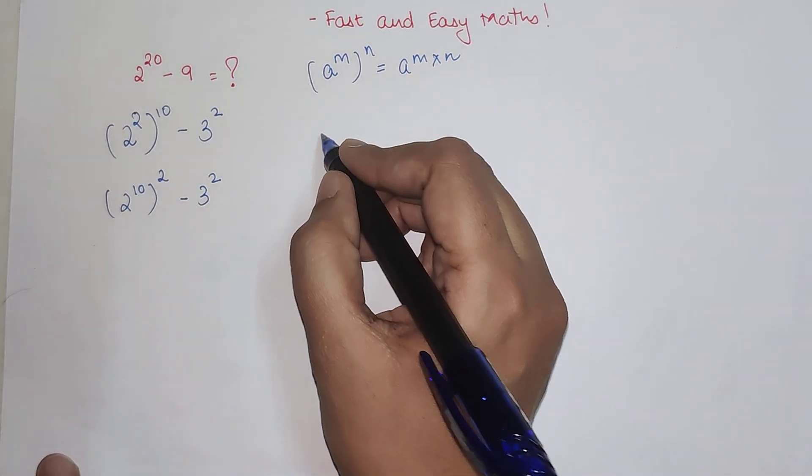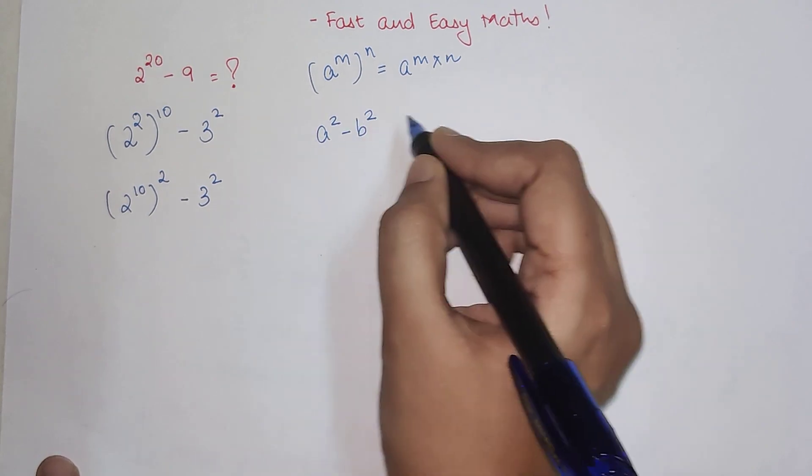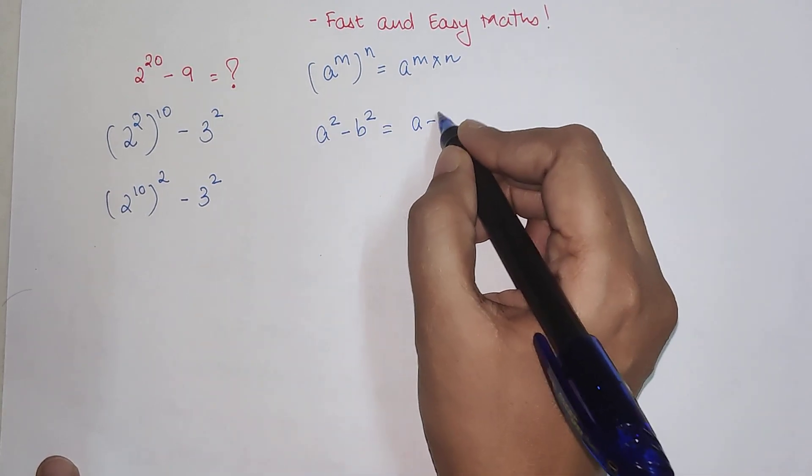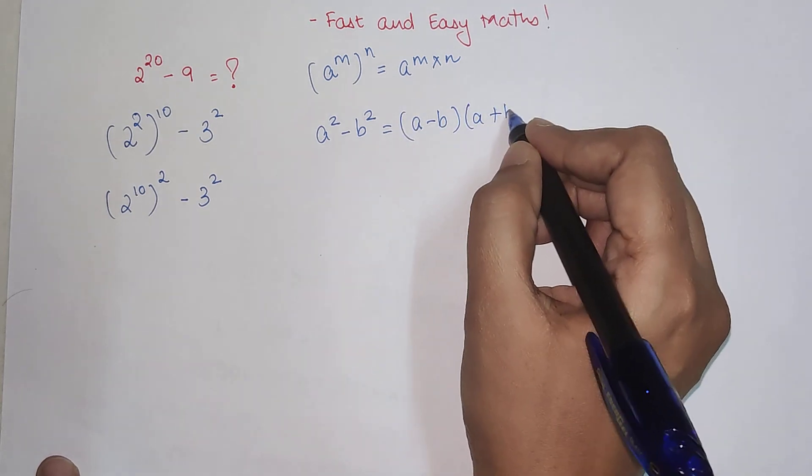a^2 - b^2 is nothing but (a - b)(a + b).